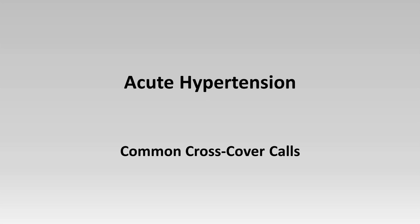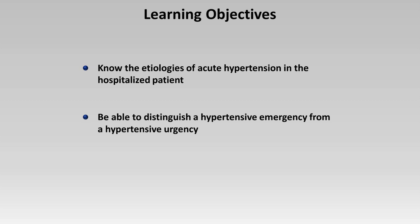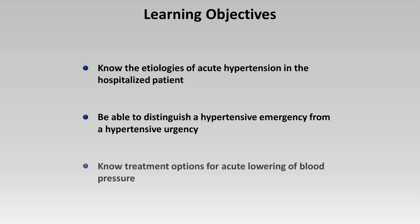Hello everyone. This video will review how to handle cross-cover phone calls related to acute hypertension in the hospital. The learning objectives are to know the etiologies of acute hypertension in the hospitalized patient, be able to distinguish a hypertensive emergency from a hypertensive urgency or a simple uncomplicated high blood pressure reading, and to know treatment options for acute lowering of blood pressure.